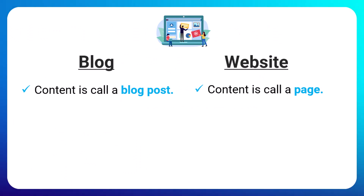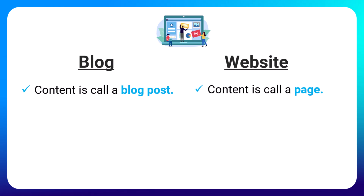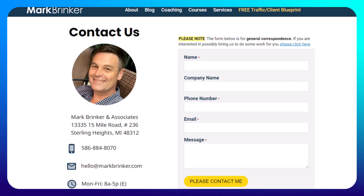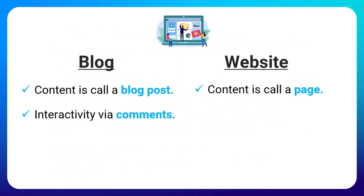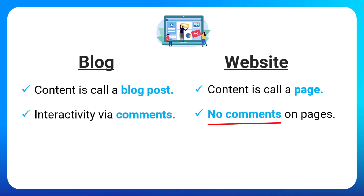When you publish content on a traditional website, it's called a page, and pages are not presented sequentially like they are on a blog. Pages are just standalone static pieces of content without any time or date stamp. Pages typically provide core information about your business, like your about page, contact us page, or privacy policy page. Another difference is blog posts allow for interactivity with readers via comments, whereas standard web pages normally do not have a commenting section.